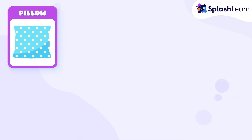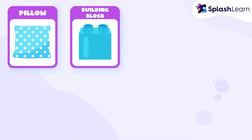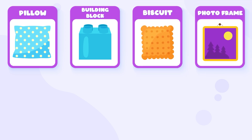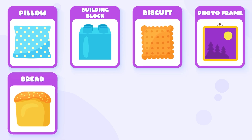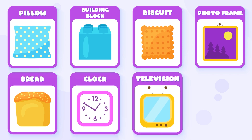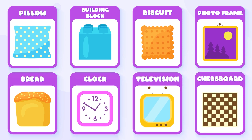Pillow is square. Building block is square. Biscuit is square. Photo frame is square. Bread is square. Clock is square. Television is square. Chess board is square.